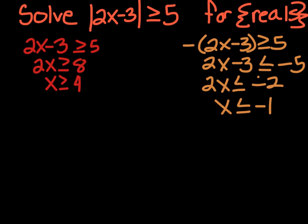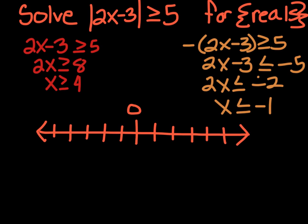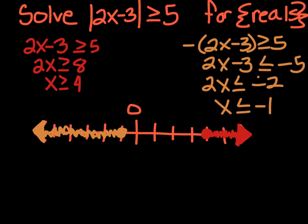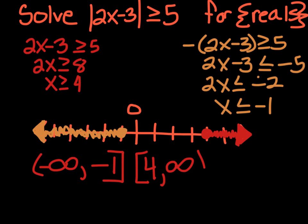So we have two solutions; we're going to put them on the number line. For x is greater than or equal to 4: closed circle at 4, shade to the right and color the arrow. And x is less than or equal to negative 1: closed circle on negative 1, shade everything to the left and color the arrow. Anything in either of those areas will satisfy this inequality. Our answer in interval notation is negative infinity to negative 1 inclusive, and 4 to infinity.